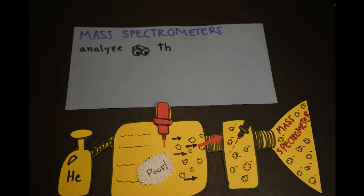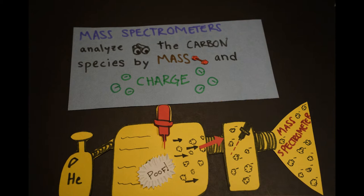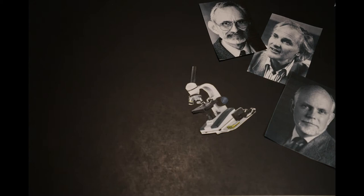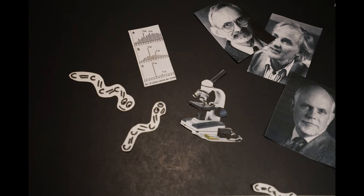Mass spectrometers sort molecules based off of their mass and their charge. Sir Harry, Curl, Smalley, and friends studied the results. The experiment worked! Sir Harry saw the snake-like carbon chains.